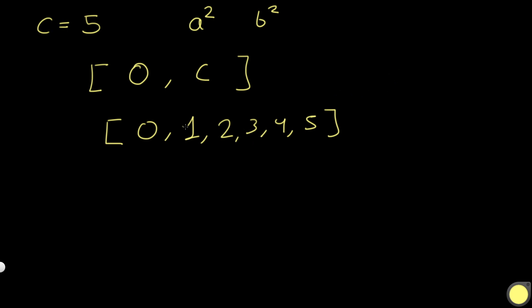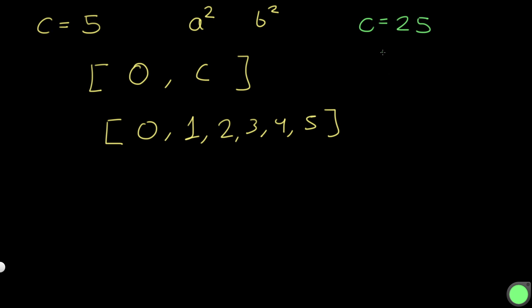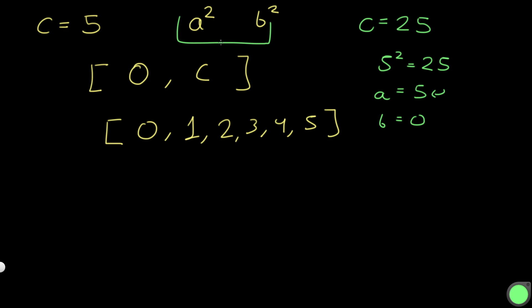Let's take c equal to 25. Notice that 5 squared equals 25, so one of the numbers could be 5 with b equal to 0. There will never be a number greater than 5 that satisfies a squared plus b squared equals c, because 6 squared, 7 squared, or anything past that is always going to be greater than 25. So we can shorten our search space to 0 to the square root of c — since anything past square root of c is automatically too big.